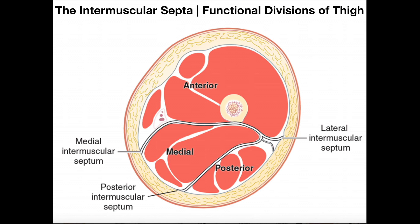They're divided as such. The divisions are actually due to structures called intermuscular septa — we'll explain what those are — and the interconnecting deep fascia. Here's a general view cross-section of the thigh. These muscles over here are the anterior muscles; these are actually going to be the quadriceps femoris, and these are just going to be knee extensors.